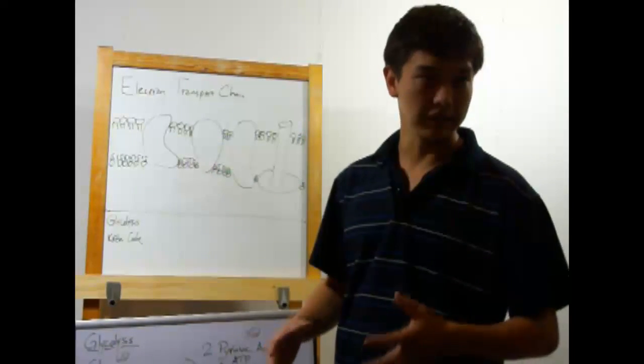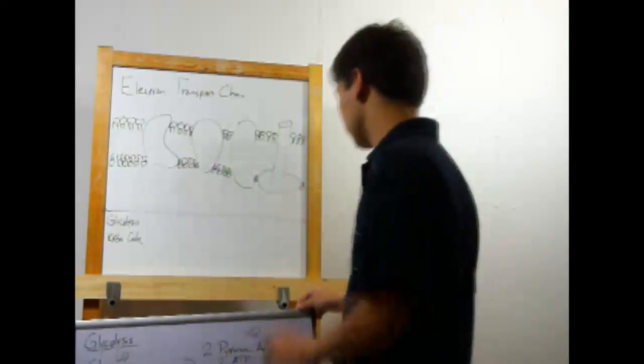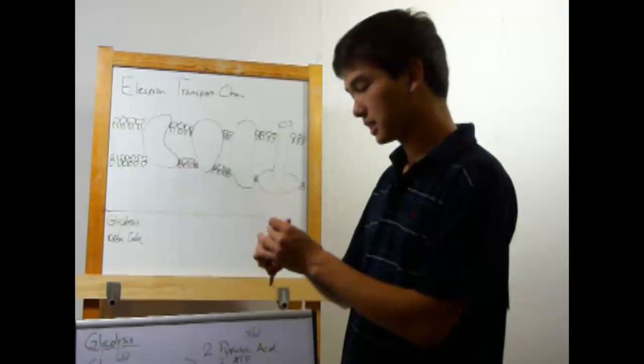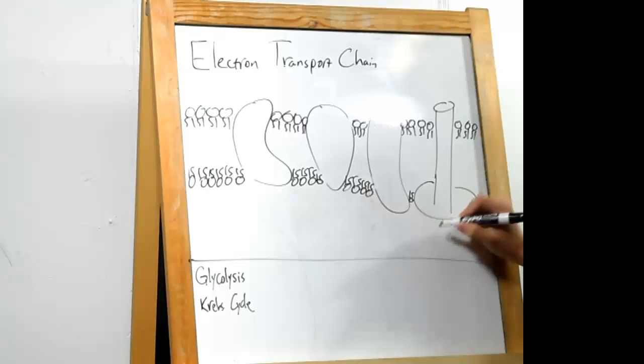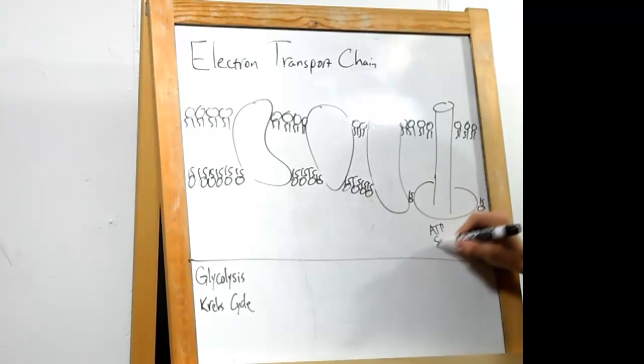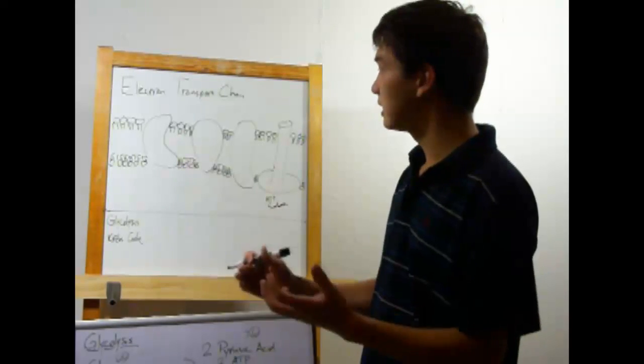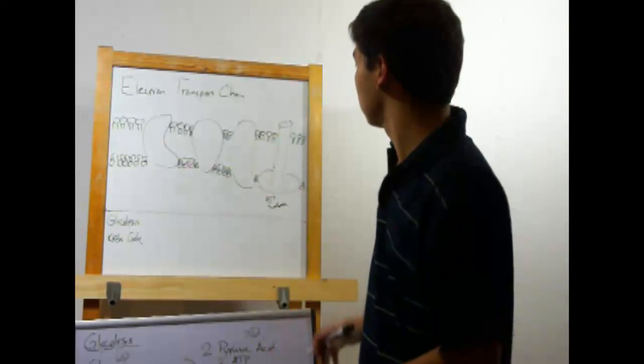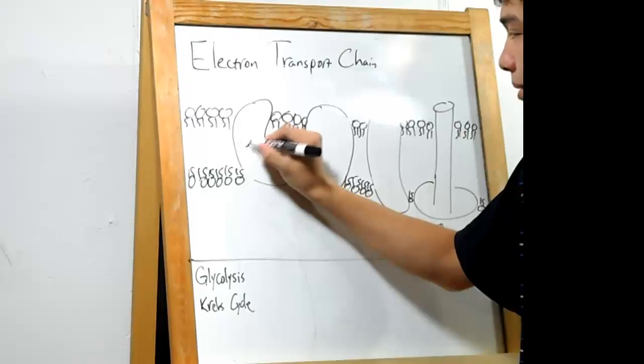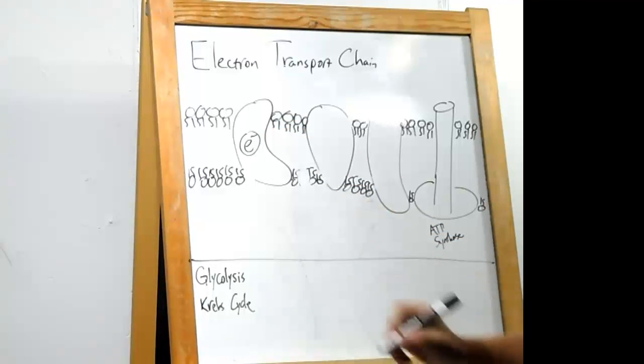These blobs represent proteins embedded in the membrane, and this particularly specially shaped blob represents a protein known as ATP synthase. We'll get there in a minute. Okay, so remember all those electron carriers we had, NADH and FADH2. This is where they come in. They will donate the electrons they've been holding on to, to these proteins.